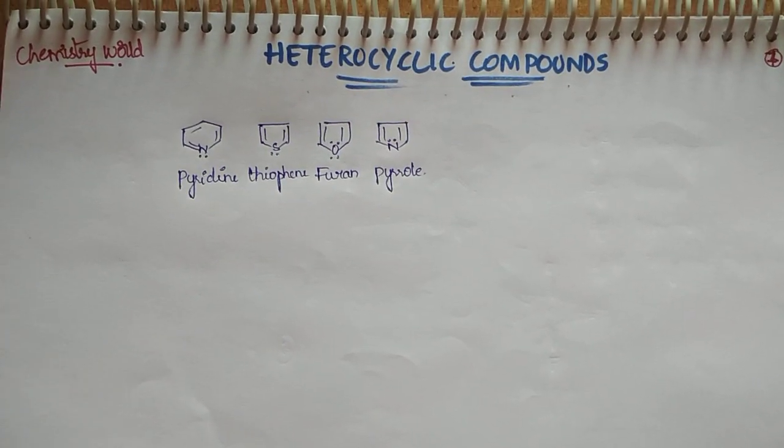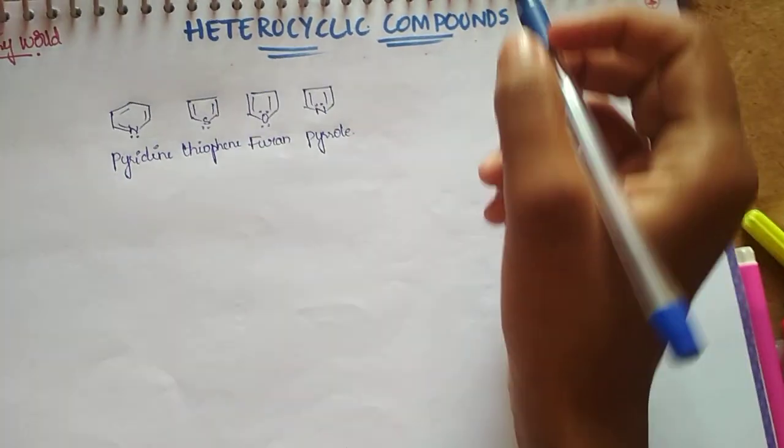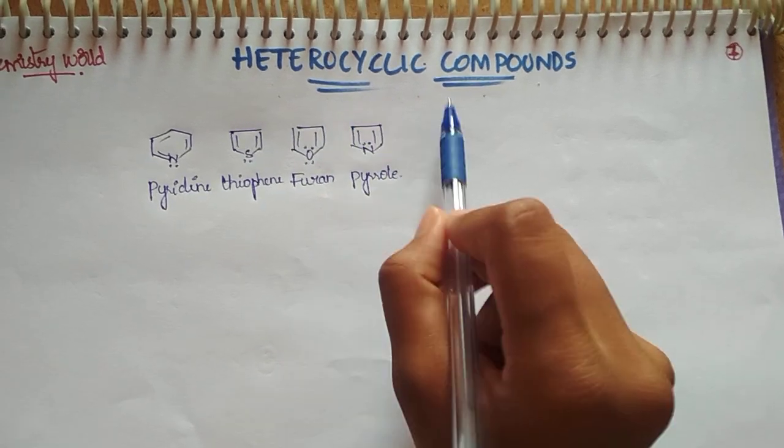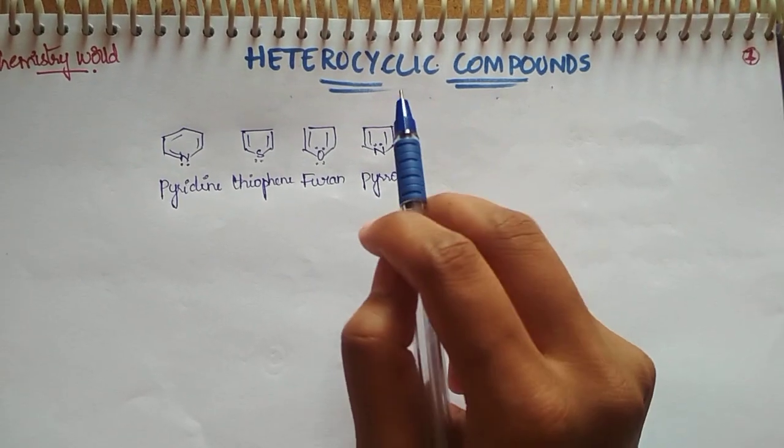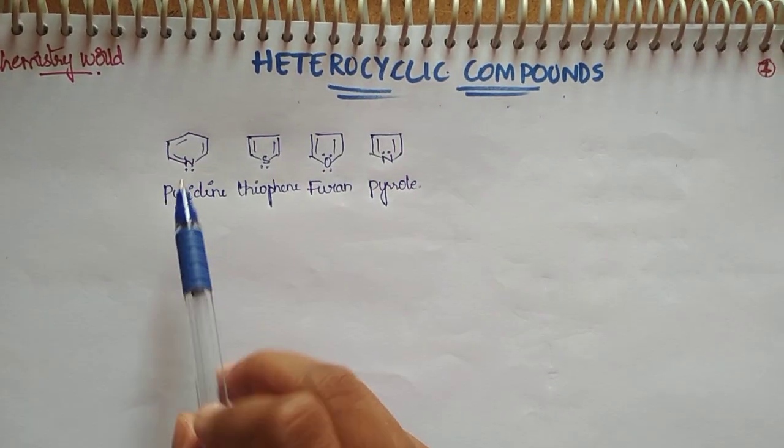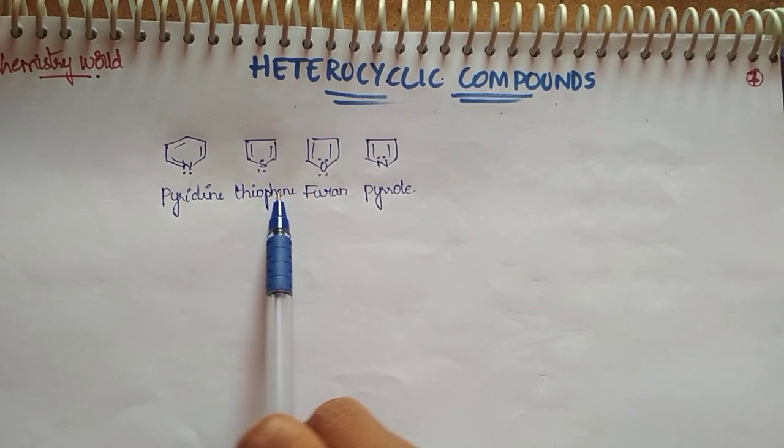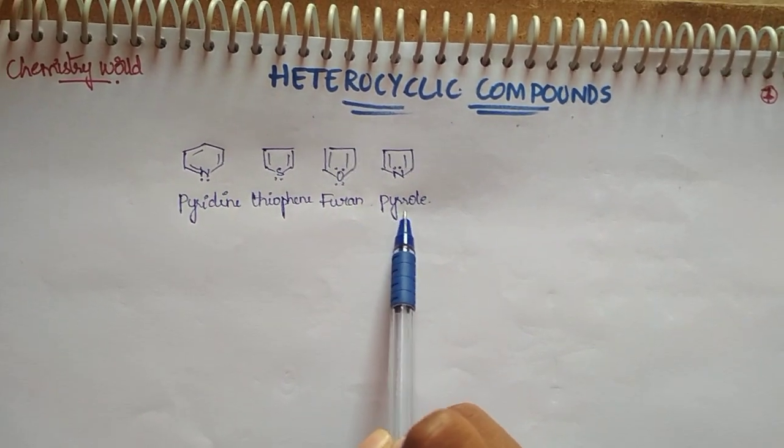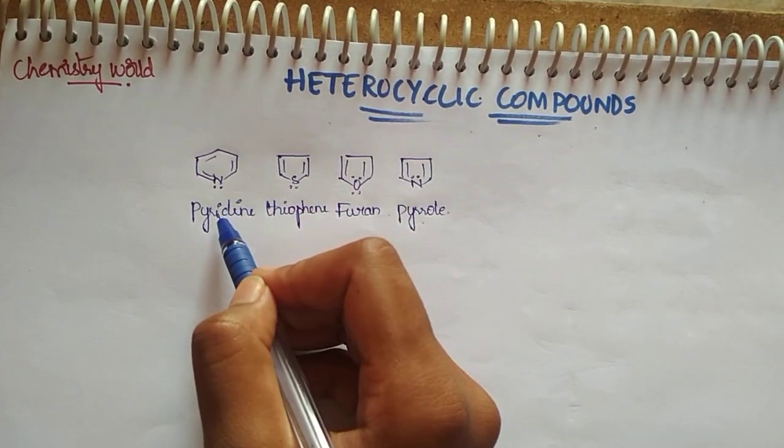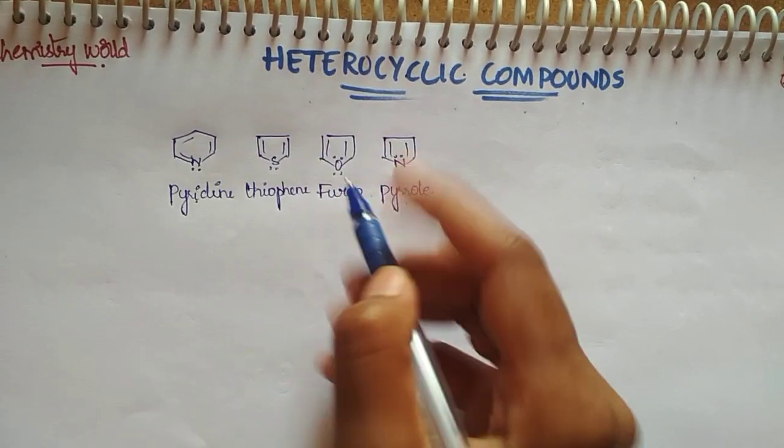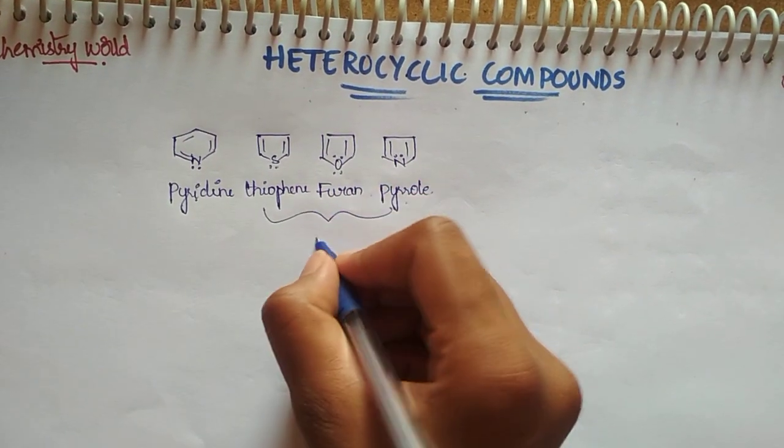Hello, welcome to the Chemistry World. Today I'm going to tell you about heterocyclic compounds. We have heterocyclic compounds like pyridine, thiophene, furan, and pyrrole. The six-membered ring is pyridine, and the five-membered rings are thiophene, furan, and pyrrole.